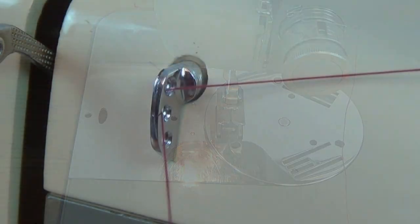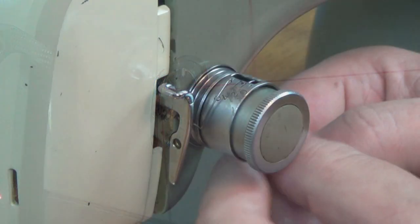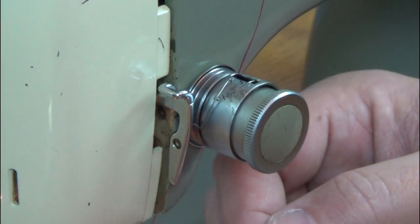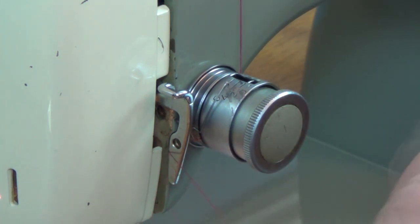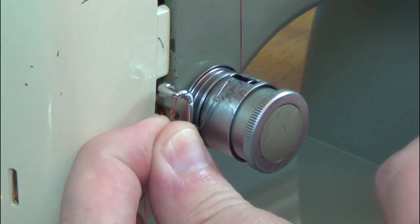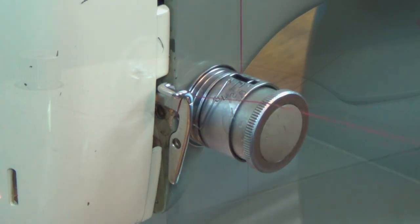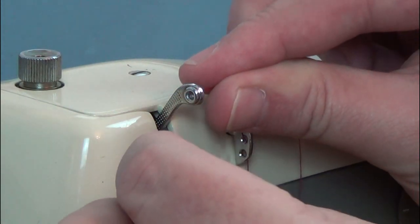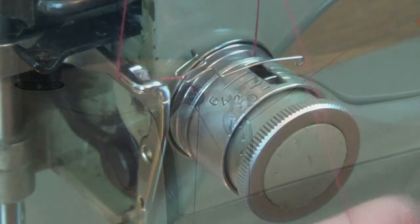To thread the machine, leave the thread laced in the front of the thread guide. Bring the thread down into one of the two sets of tension discs and over the check spring. Down under the thread guide hook, and then up through the slot in the top. Then up through the eye of the take up lever, and back down into the slot again.